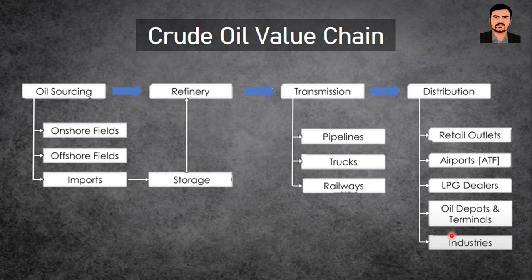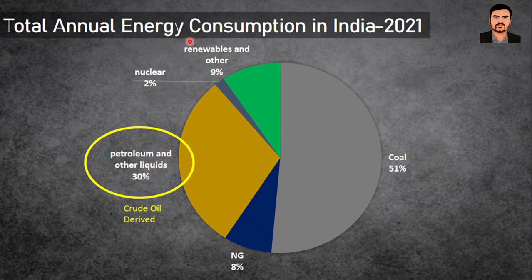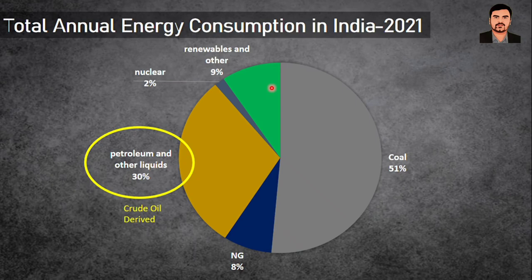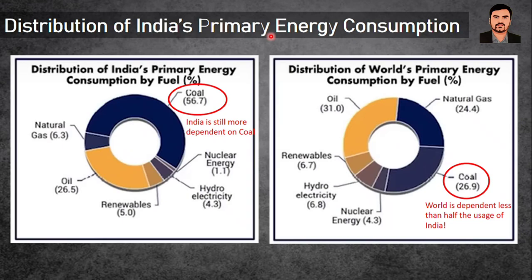Looking at total annual energy consumption in India as per 2021, the majority — 51% — is met through coal. Natural gas accounts for only 8%, petroleum and other liquids derived from crude oil is 30%, nuclear is barely 2%, and renewables is just 9%. In India's primary energy consumption, coal is 56%. Comparing with the world, global primary energy consumption has coal at just 27%, showing India is far more reliant on coal.